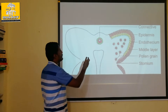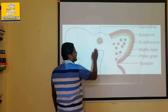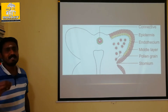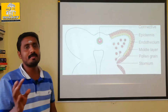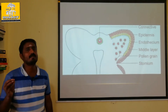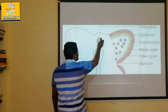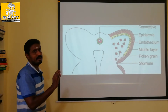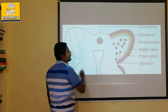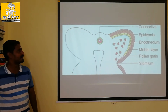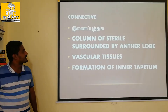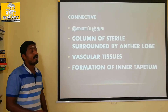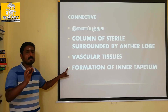The center contains sterile cells. Sterile cells will not be multiplied or developed further. The neck of the tissue connects to the surrounding tissue. Vascular tissues are very important in this region.